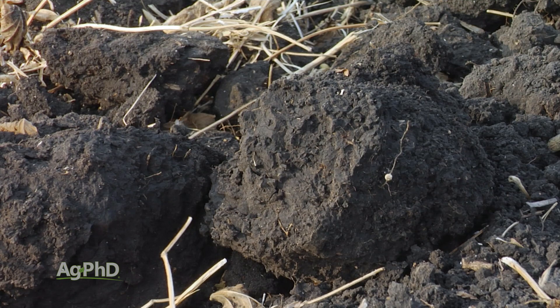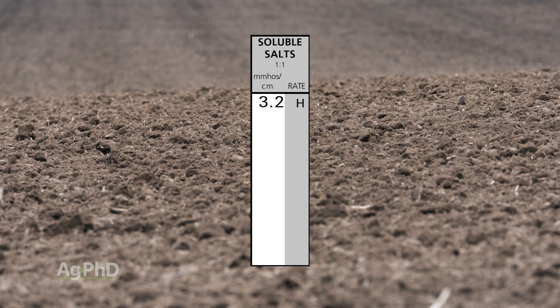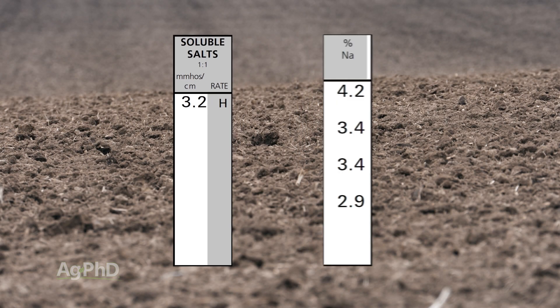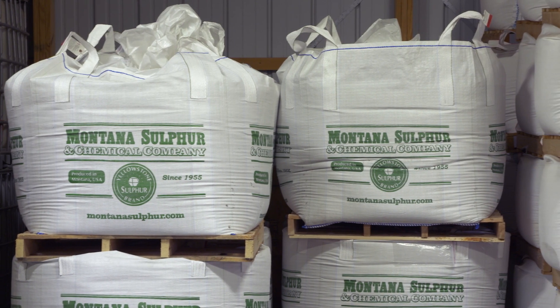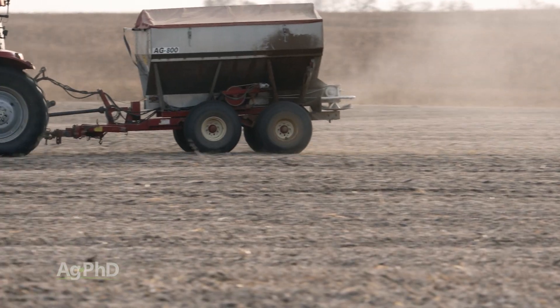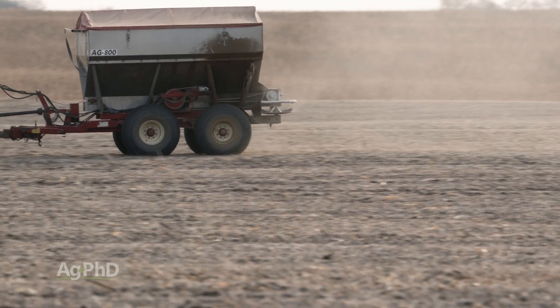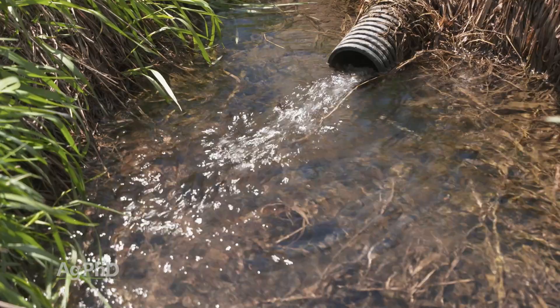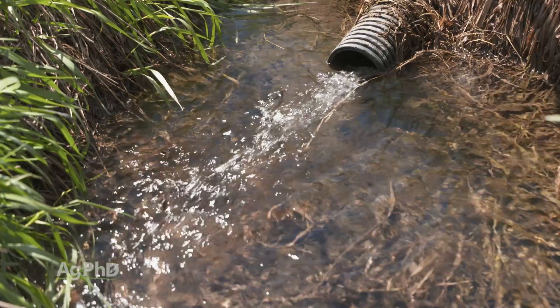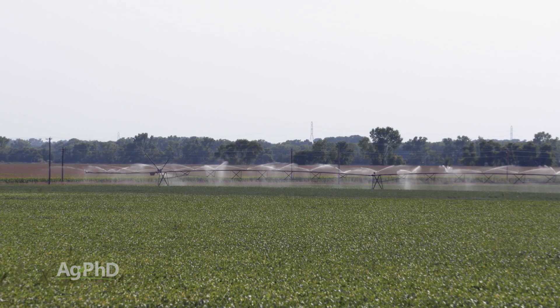The one good thing is a saline issue is much, much easier than a sodic issue to fix. With sodic soil, you have to take that excess sodium and turn it into a salt before you can get it leached out of the ground. With a saline issue, salts are leachable — they will go away if you simply have good drainage. So when you have natural rainfall or irrigation, you can flush that out of the ground.